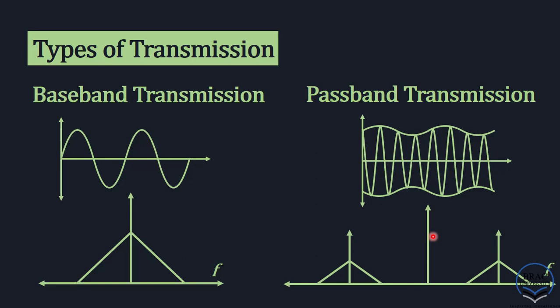In the case of baseband transmission, the signal is transmitted in its raw form without any modification. But in the case of passband transmission, the signal is not transmitted in its raw version. Let's imagine you want to deliver a message to your friend who is far apart from where you are. Simply yelling the message will not work. So there has to be some intermediate block which converts your signal and makes it more suitable for transmitting over a long distance. That is the function of a modulator.